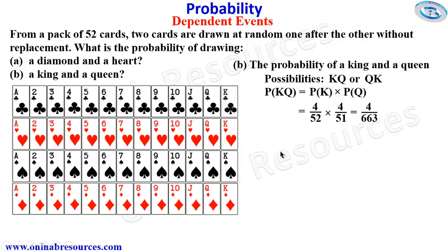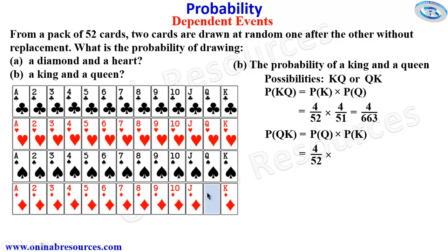Then we go ahead to calculate the probability of the first one being queen and the second one king. The probability will be the probability of drawing a queen times the probability of drawing a king. The number of cards with queen is 4 over 52. Then a card with queen is gone, and we are left with 3 of the cards with queen and a total number of 51 cards. So the probability of picking the second one king is going to be 4 over 51. Simplifying this, we have 4 over 663.